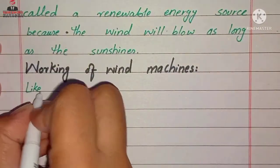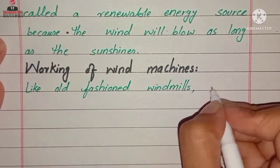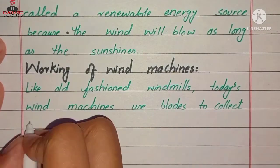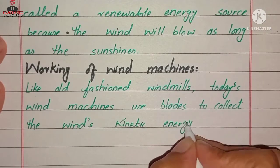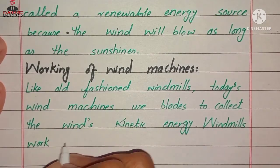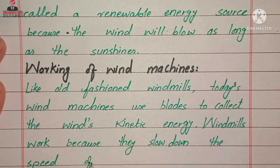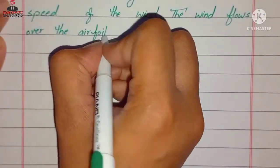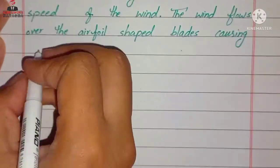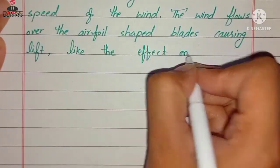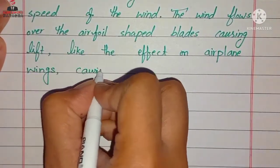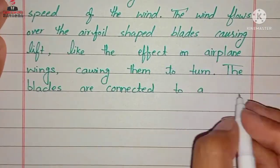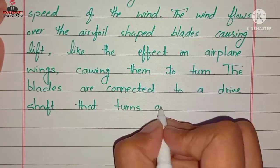Working of wind machines: Like old-fashioned windmills, today's wind machines use blades to collect the wind's kinetic energy. Windmills work because they slow down the speed of the wind. The wind flows over the airfoil-shaped blades, causing lift like the effect on airplane wings, causing them to turn. The blades are connected to a drive shaft that turns an electric generator to produce electricity.